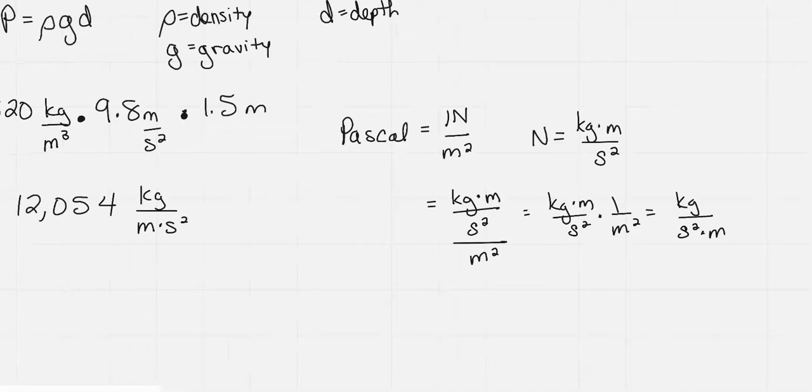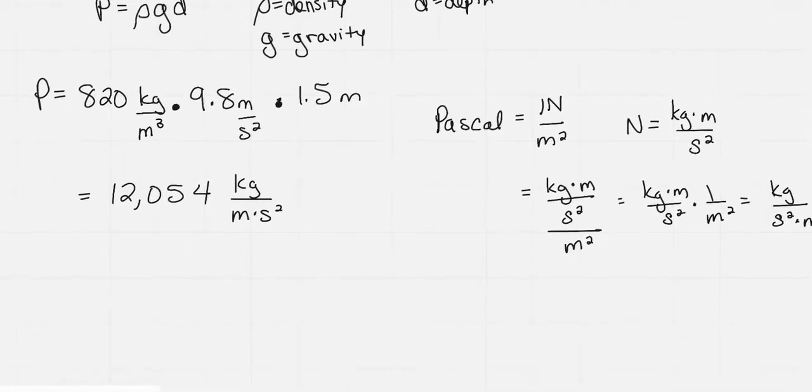So the Pascal, and we'll see the relationship even better for part B, is 1 newton per square meter is essentially what it's saying. And so that's what we got. We got that the pressure per square meter is this many newtons. And so we call this 12,054 pascals. But because they're such large numbers, they like to do kilopascals, and so we could actually divide that by 1,000 and put 12.054 kPa is another way to denote that.